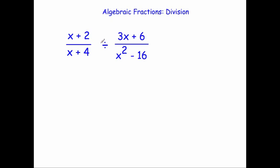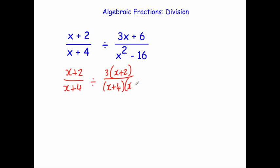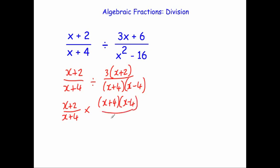Our last example: (x plus 2) over (x plus 4) divided by (3x plus 6) over (x squared minus 16). I'm going to factorize before I begin. The numerator of the second fraction, 3x plus 6, factorizes to 3(x plus 2). The denominator, x squared minus 16, is a difference of two squares: (x plus 4)(x minus 4). Now I multiply by the reciprocal of the second fraction, giving (x plus 2) over (x plus 4) times (x plus 4)(x minus 4) over 3(x plus 2).